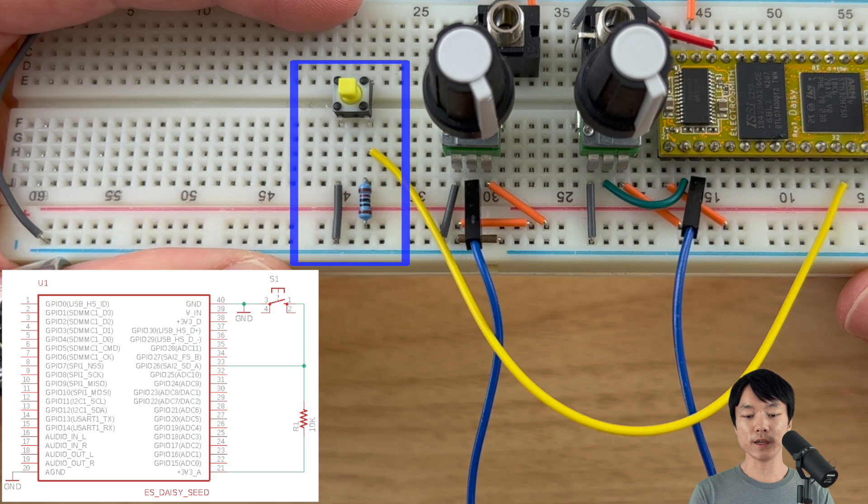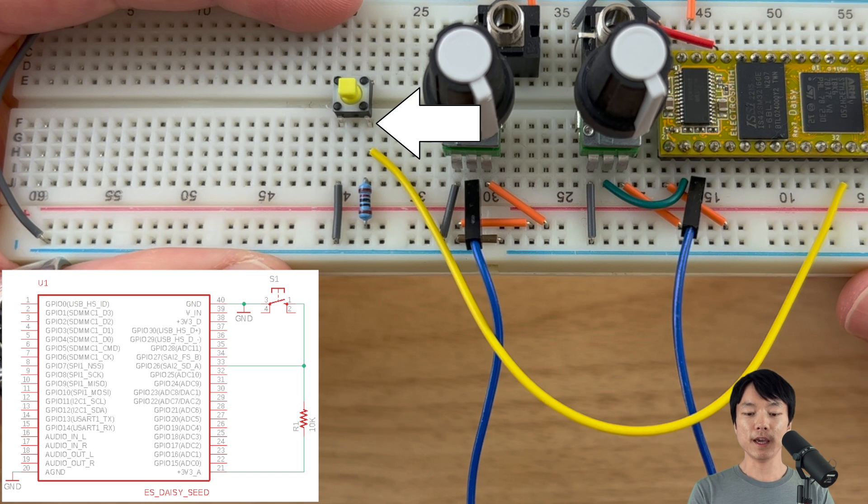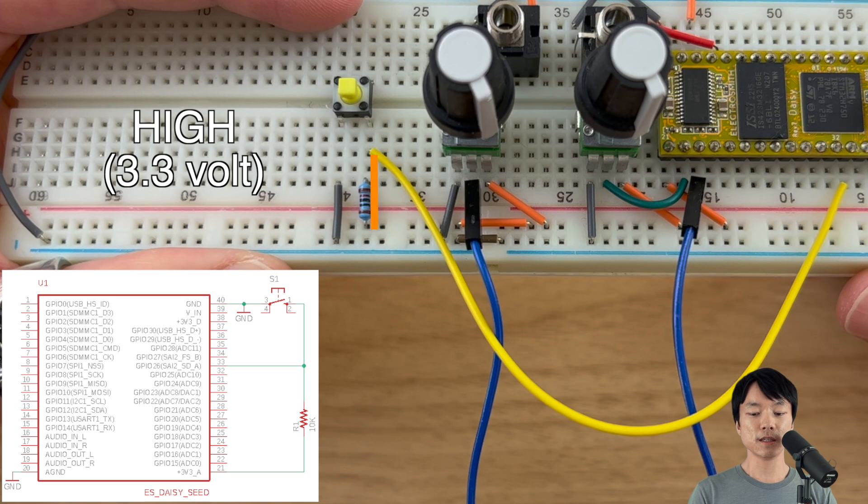So here's one of the ways we can connect the button to the DAISY. I'll show you a simpler circuit in a few minutes, so no need to recreate this first one. One pin of the button is connected to a ground rail, and another pin is connected to the DAISY's digital pin, as well as a resistor that's connected to the positive power rail. When the button is not pressed down, the DAISY's digital pin will read the input as high or on, since the only connection is to the 3.3V through a resistor due to the button being open.